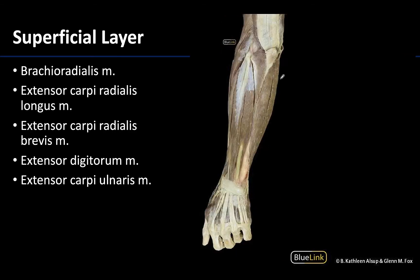Now let's actually look at a posterior view. I always try to locate the thumb first to get my bearings — here's the first digit, so this is lateral and this is medial. I highly suggest doing this when you're getting started. You can see the ulna here because it is more medial, and you can also see the prominent tendon of the triceps brachii attaching on the olecranon, which is deep in this region.